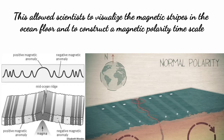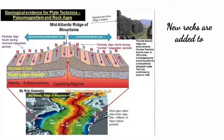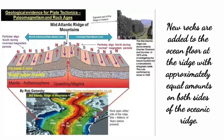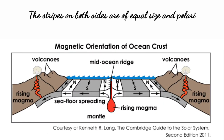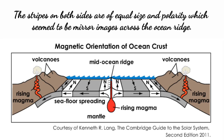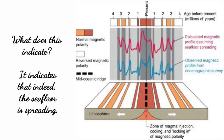Over the last 10 million years, there has been an average of 4 to 5 reversals per million years. New rocks are added to the ocean floor at the ridge in approximately equal amounts on both sides of the oceanic ridge. The stripes on both sides are of equal size and polarity, appearing as mirror images across the ocean ridge. This indicates that indeed the seafloor is spreading.